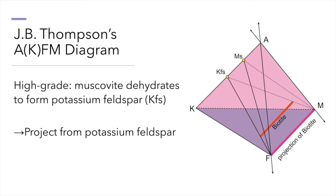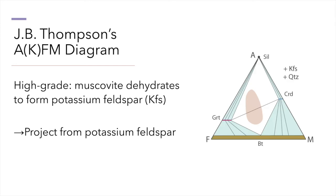Note that when projected from potassium feldspar as opposed to muscovite, potassium-bearing minerals and potassium-bearing bulk rock compositions will plot higher on the AFM diagram. When projected from potassium feldspar, biotite projects within the FM base of the AFM triangle. This AFM diagram shows stable mineral assemblages for high-temperature and relatively low-pressure metamorphism of pelites. The stable mineral assemblage for rock compositions represented by the star will be made up of garnet, sillimanite, and cordierite, with the solid solution composition of garnet and cordierite each at their vertex of the triangle, plus potassium feldspar and quartz.